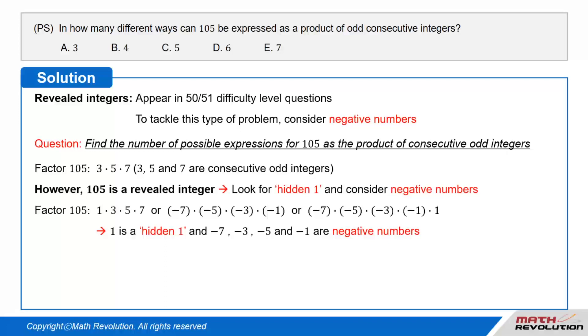However, since 105 is a revealed integer, we need to look for a hidden 1 and consider negative numbers.